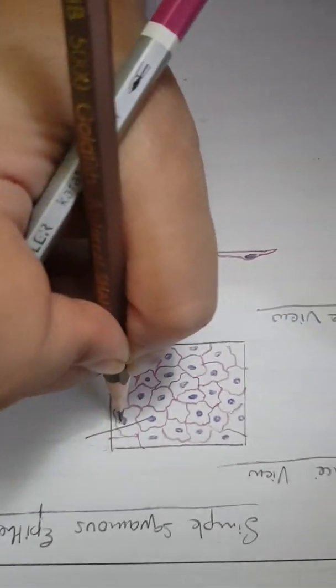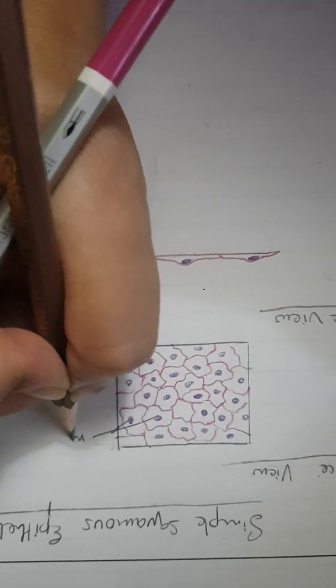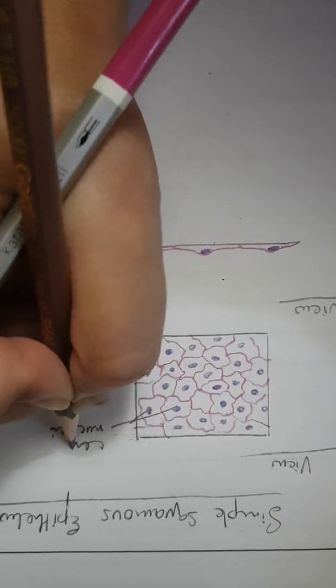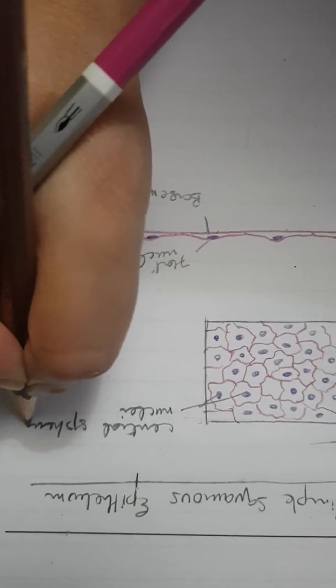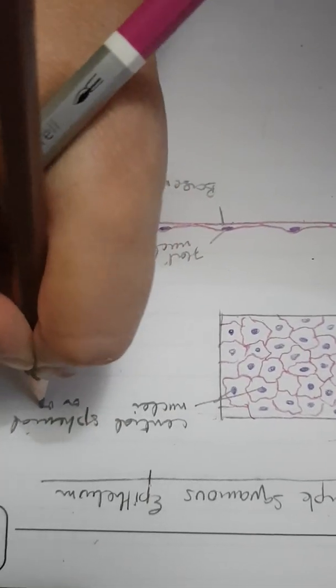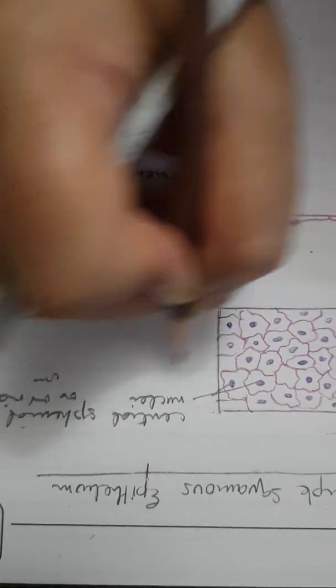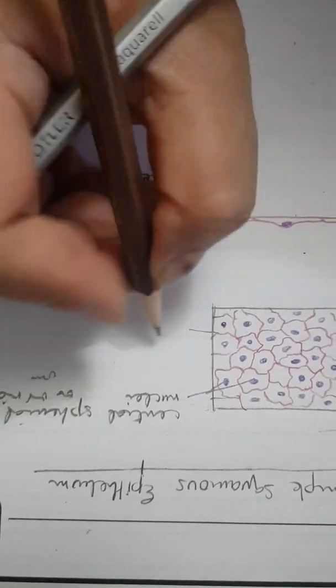You see nuclei - central spherical or ovoid nuclei. This is the cell membrane.